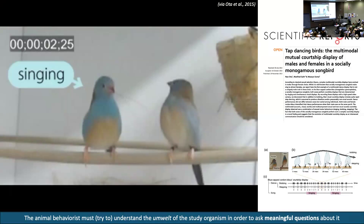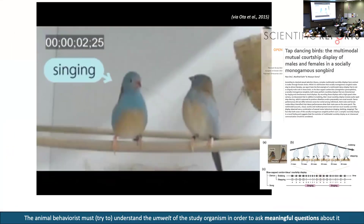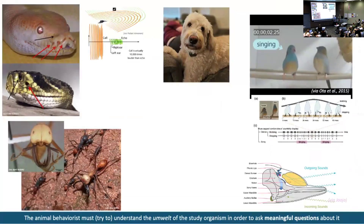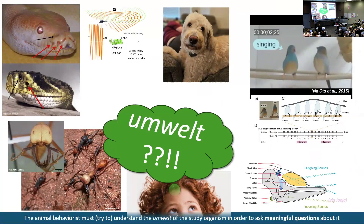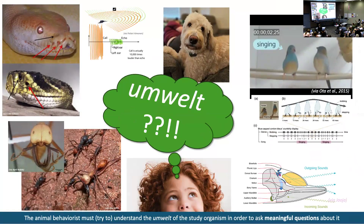A bunch of examples of animals with very different sensory experiences than us. When we want to study these things, we have to try to consider the umwelt — to get inside these animals and really ask what are the interesting how and why questions related to this animal's sensory and perceptual experience and behavioral capabilities. But that's really difficult because we have our own umwelt — we live in a world where the typical modalities for most humans are primarily visual, some acoustic, and a little vibratory.